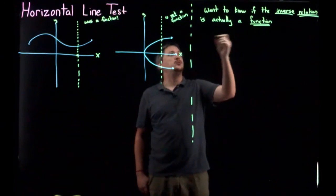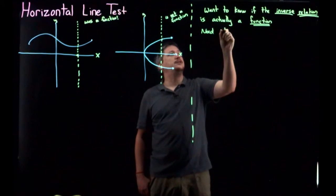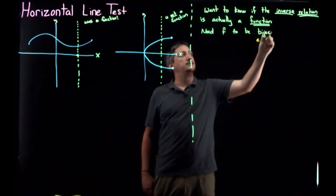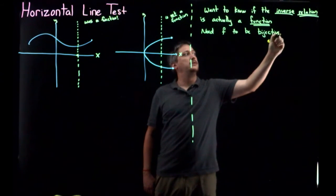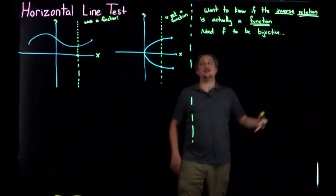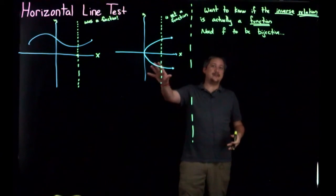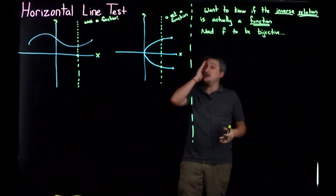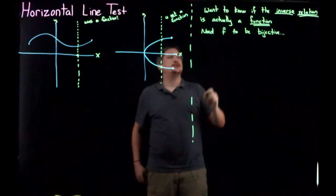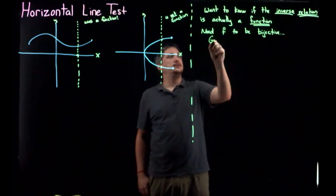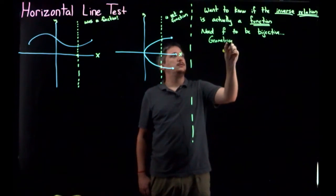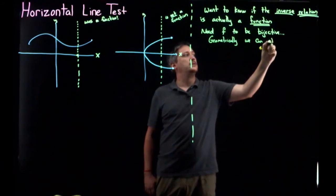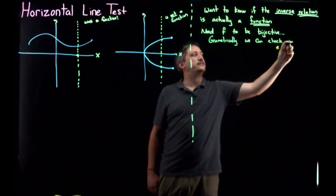So we need F to be really bijective. But the surjective part doesn't really show up on graphs in a way that, in this class, we're going to be discussing much. So really, geometrically, we can check injective.